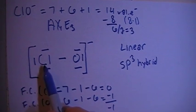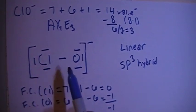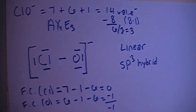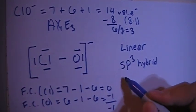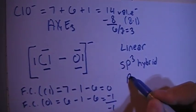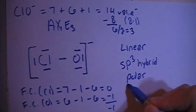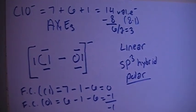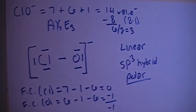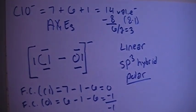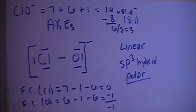And because this chlorine and this oxygen are different atoms, this is going to be a polar compound. That is pretty much it for this one. If you have any questions, let me know, and thank you for watching.